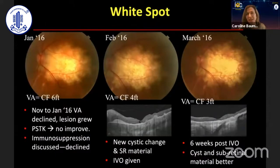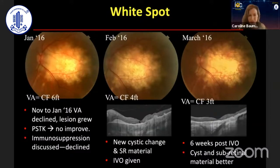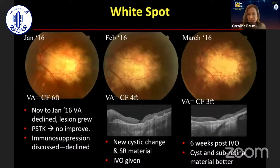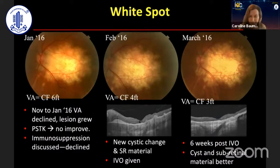If you can see under the infratemporal arcade, there are satellite lesions and this lesion is continuing to grow. Now the vision is count fingers. In between this time, the patient had sub-Tenon's Kenalog right in the middle of February 2016. There was a small little cyst and some new subretinal material, and the patient had an Ozurdex injection and actually improved, but the vision was still poor.